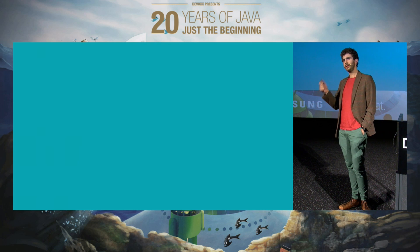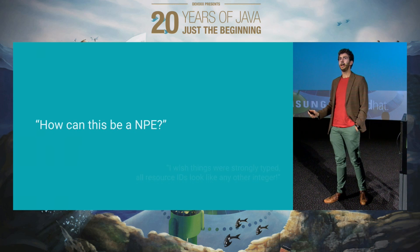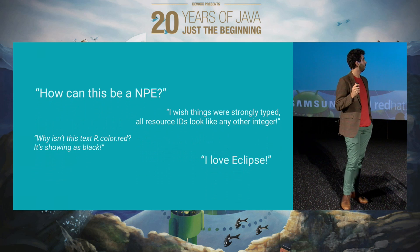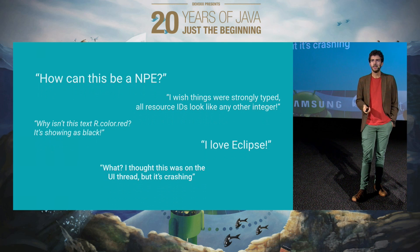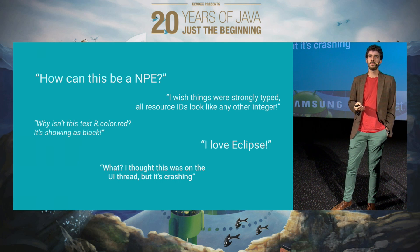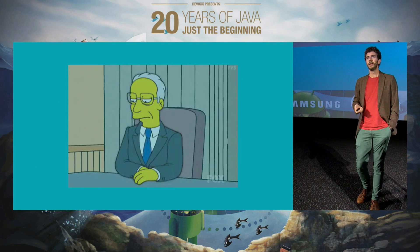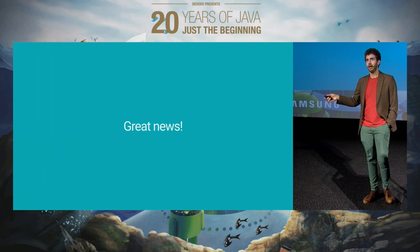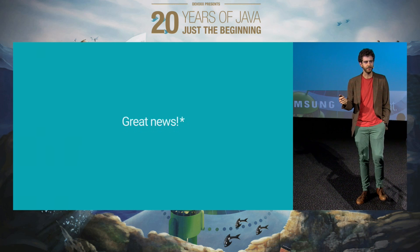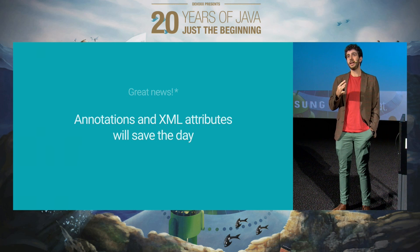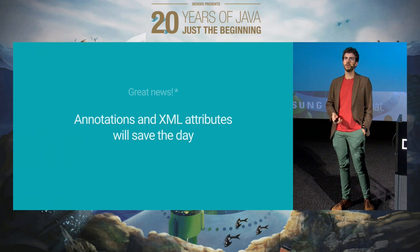I don't know if that ever happened to you, but I found myself thinking these quotes over and over when I was doing my development. These are not something you should be proud of, but it happens. If your reaction has ever been something like that when you were developing, then I have good news — we can fix most of them. We can use XML attributes and annotations in Java in our code to make our lives easier and to fix many of the annoyances that we would otherwise have.